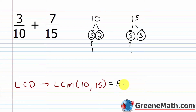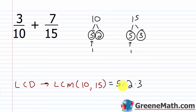I'm going to multiply by the remaining factors: I have a 2 here and no 2 over here, so I throw it in. I have a 3 here and no 3 over there, so I throw that in. So the LCD — the LCM of 10 and 15 — is 5 times 2 times 3: that's 5 times 2 which is 10, times 3, which gives us 30.